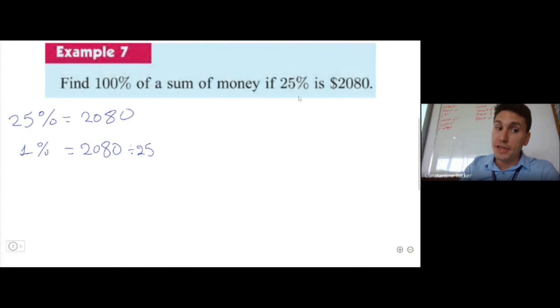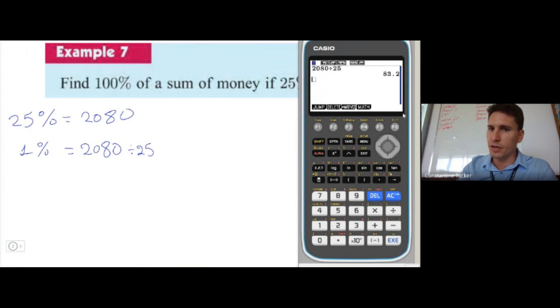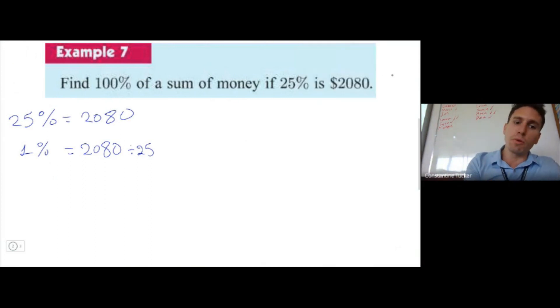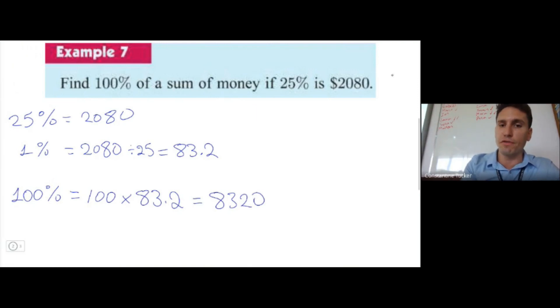So let's see: firstly, in this method, the unitary method, we take this amount 2080 and divide by 25, so that gives us 83.2. Great! So we know that 1% is equal to 83.2. So how do we get now 100%? We multiply by 100. So if 1% is equal to 83.2, then 100% will be 100 times 83.2, so that will give us $8320. From this we get 100% of the amount is going to be equal to $8320. So this would be the very final answer using the unitary method.